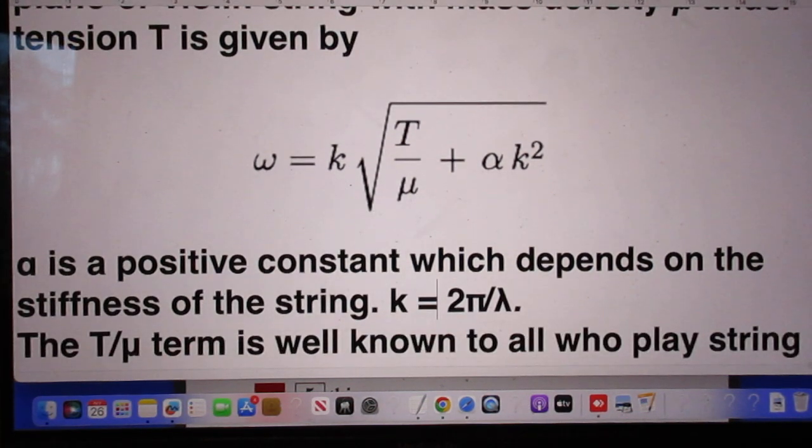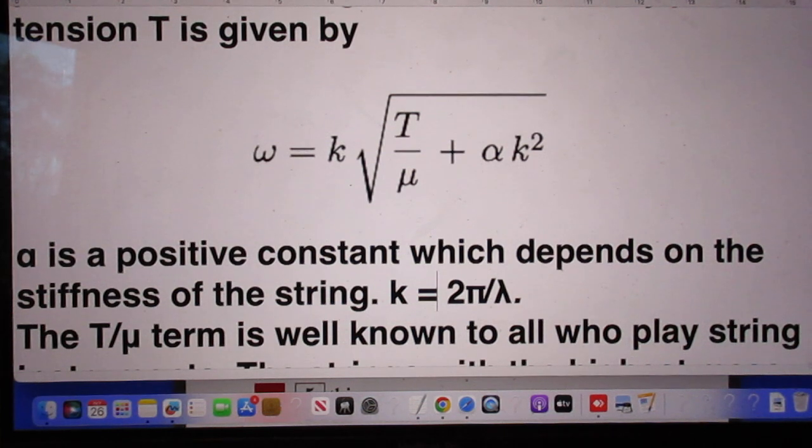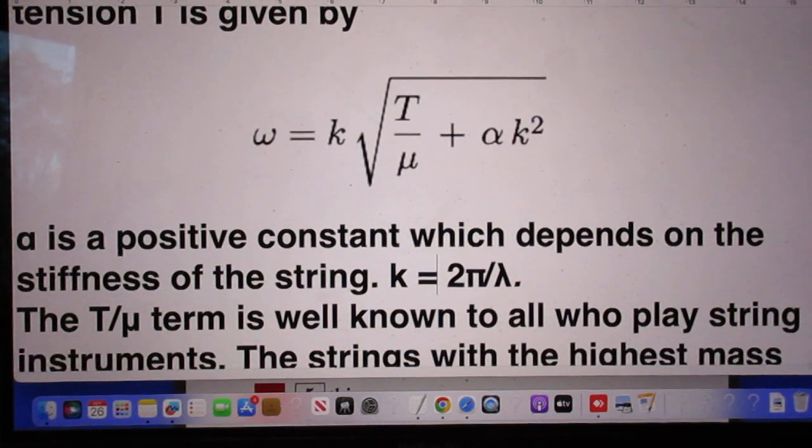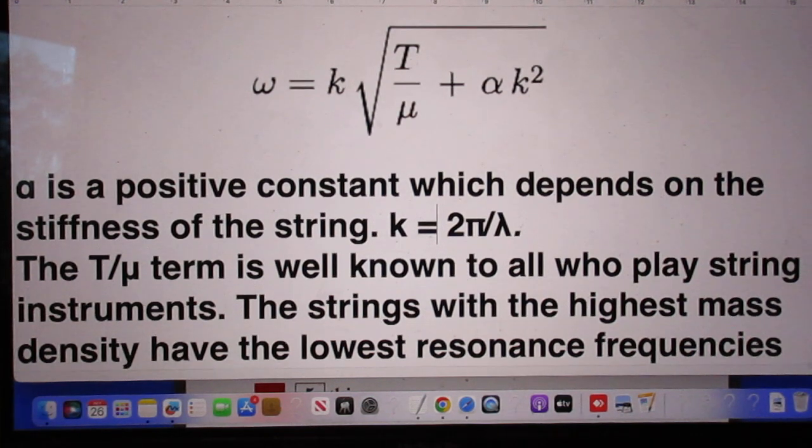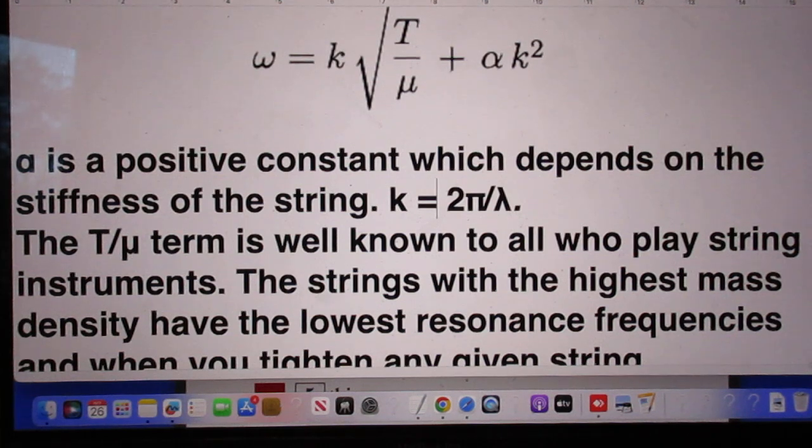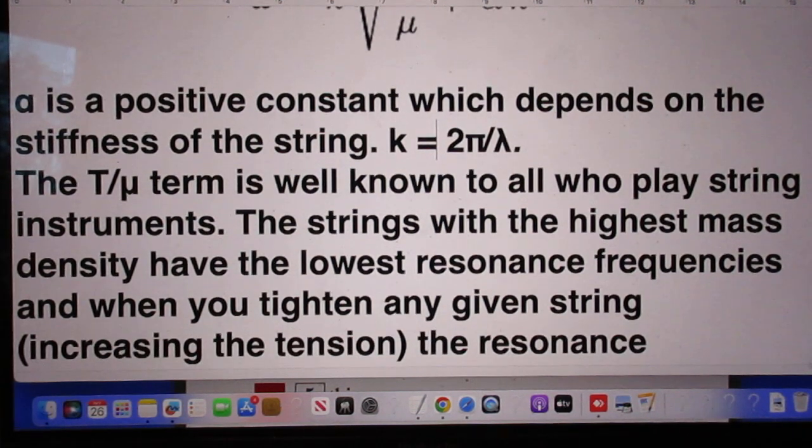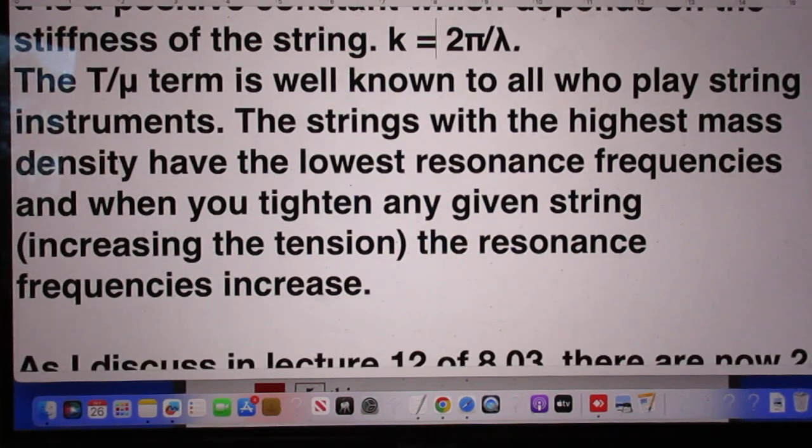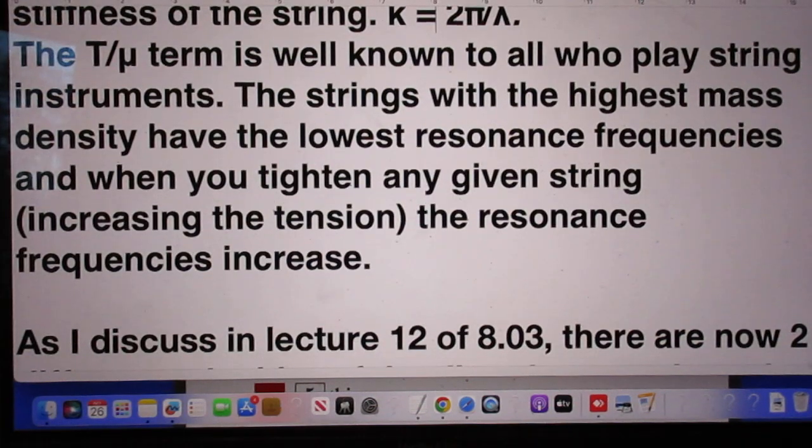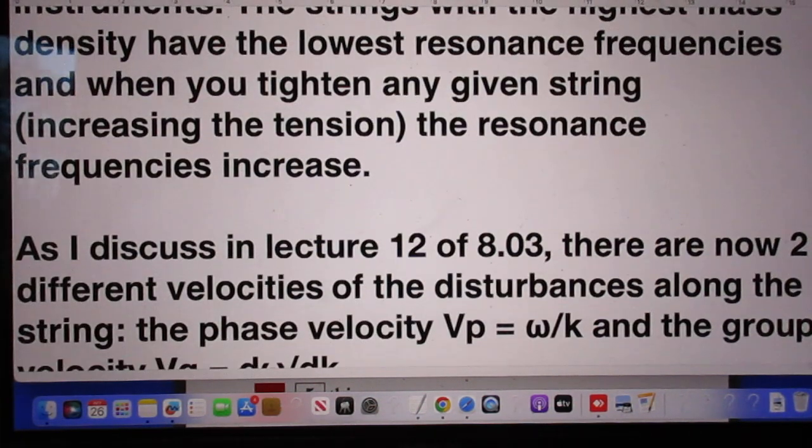And there you see the equation. Alpha is a positive constant which depends on the stiffness of the string, and the wave number k is 2π divided by λ. The T divided by μ term is well known to all who play string instruments. Strings with the highest mass density have the lowest resonance frequencies, and when you tighten any given string, that means you increase the tension, the resonance frequencies increase.